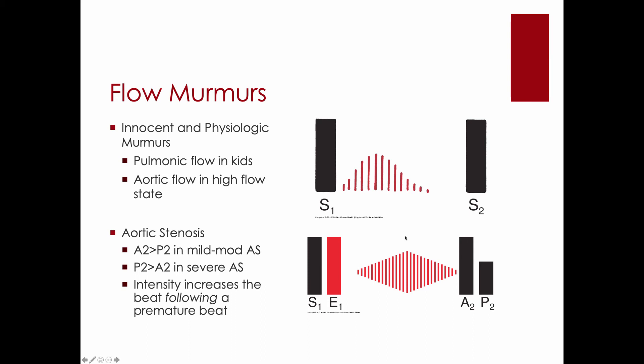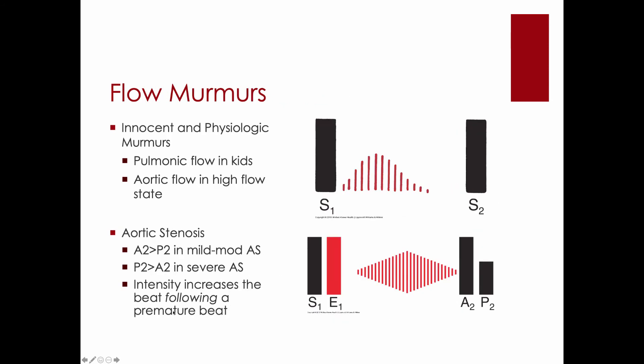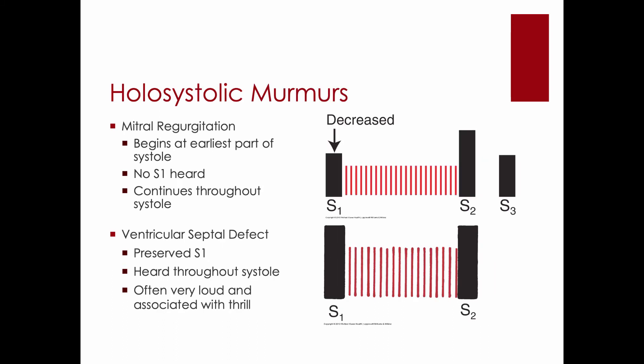One little trick to differentiate this murmur from this murmur is to listen for an extra beat. So the beat following a premature beat, not the premature beat, but the one after it, if you have aortic stenosis, it's going to sound louder.